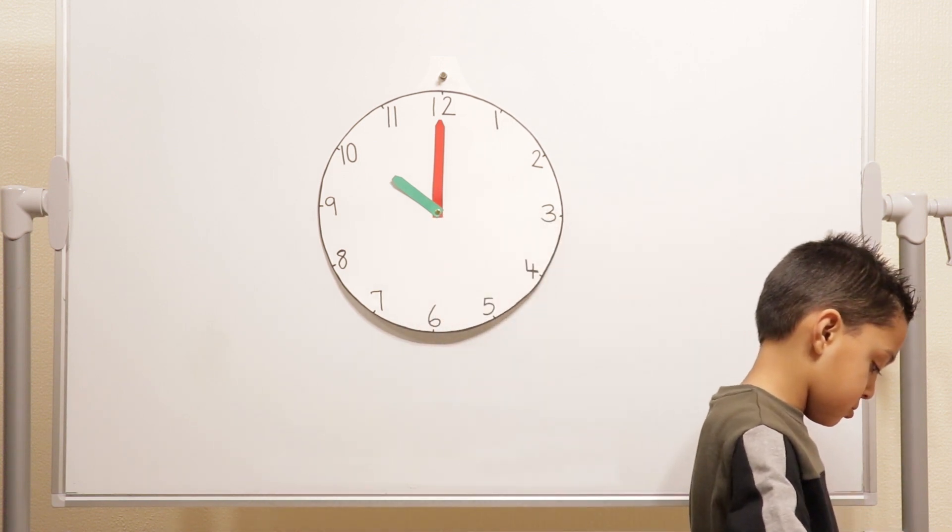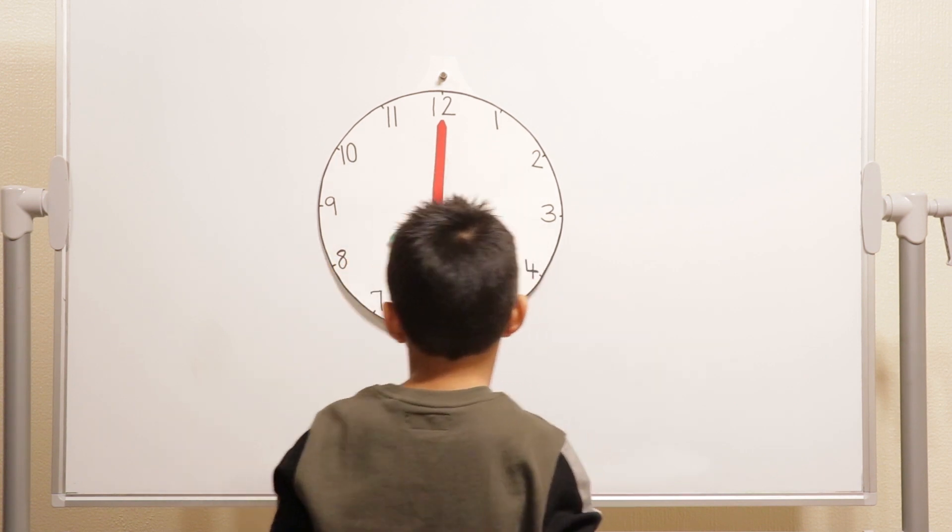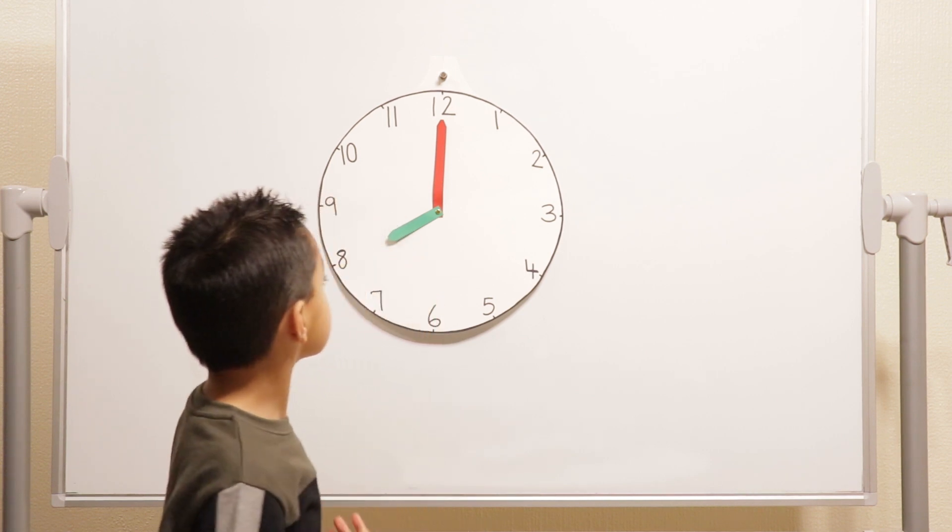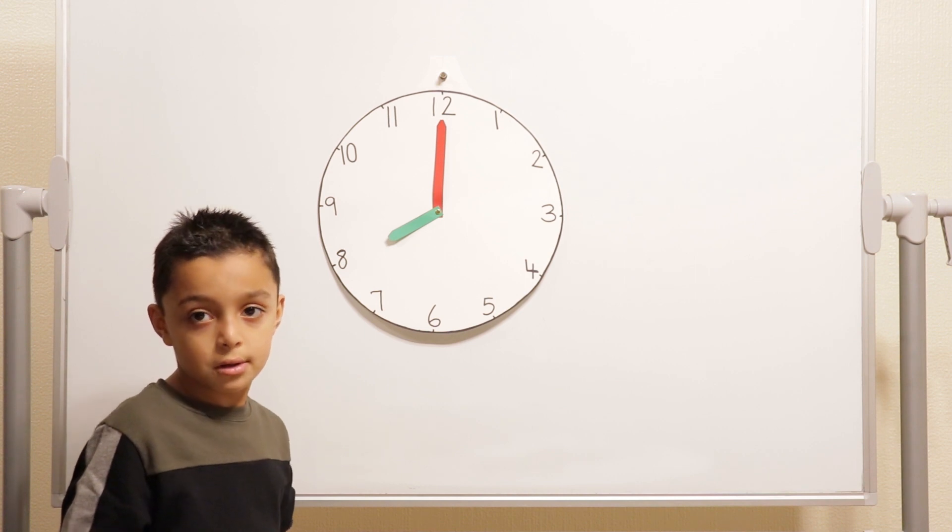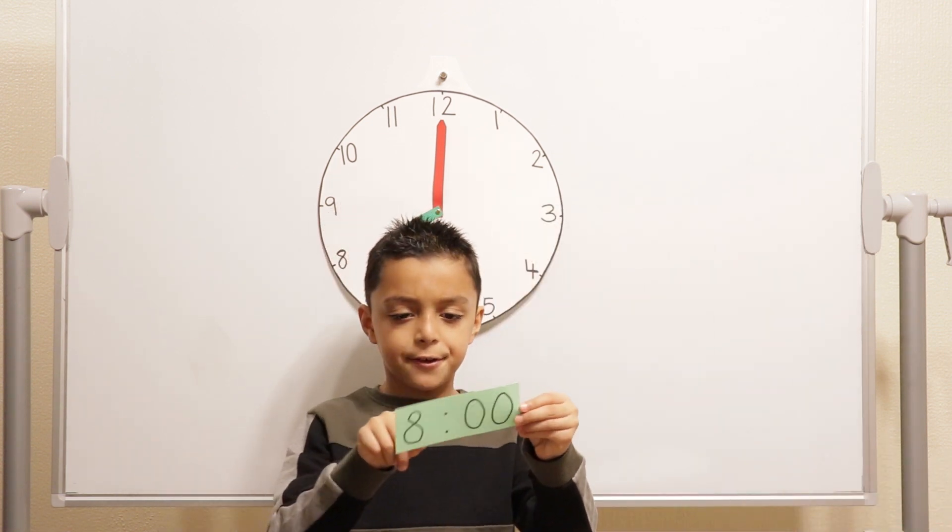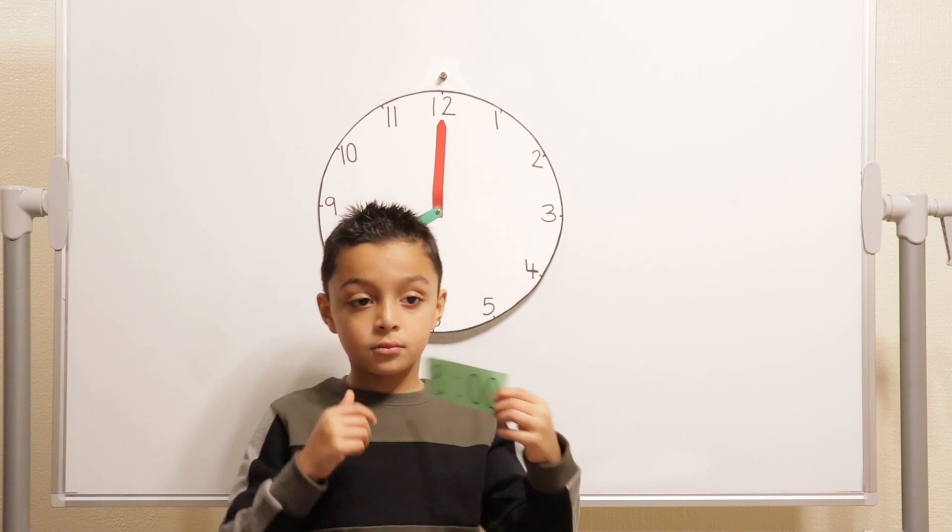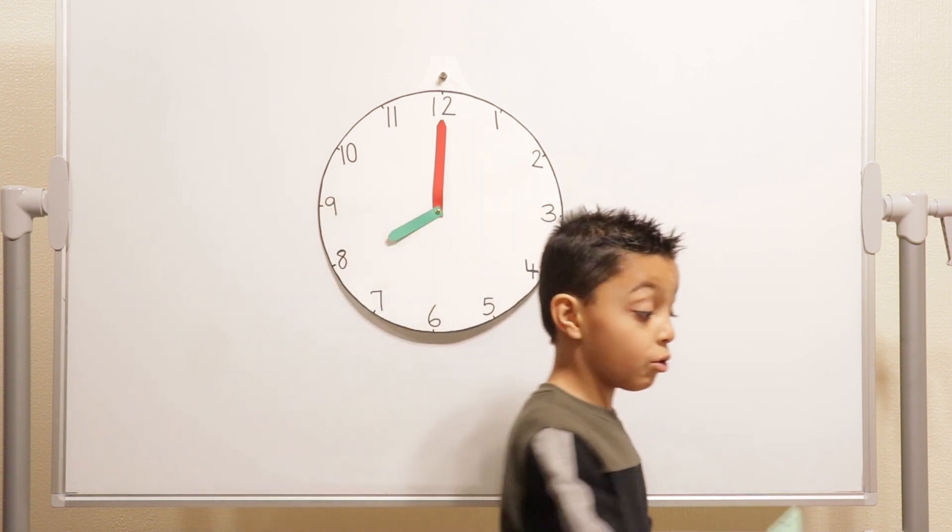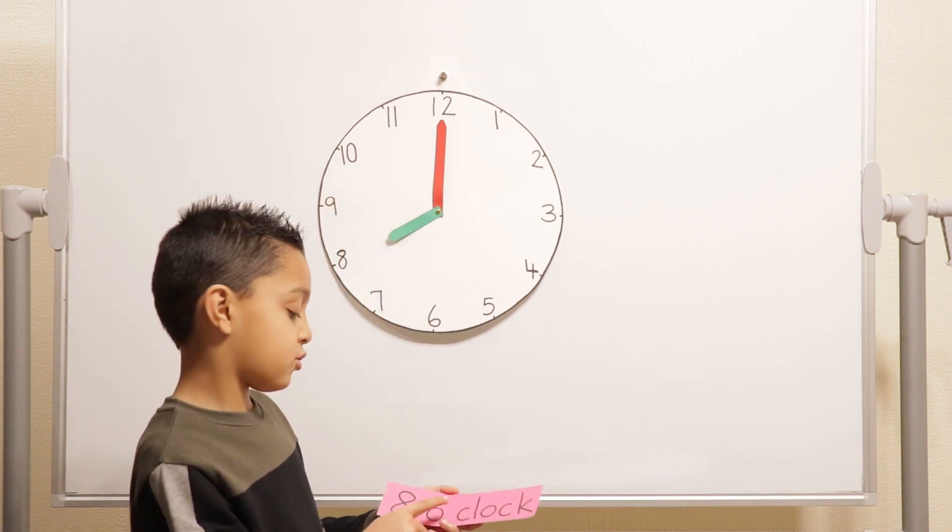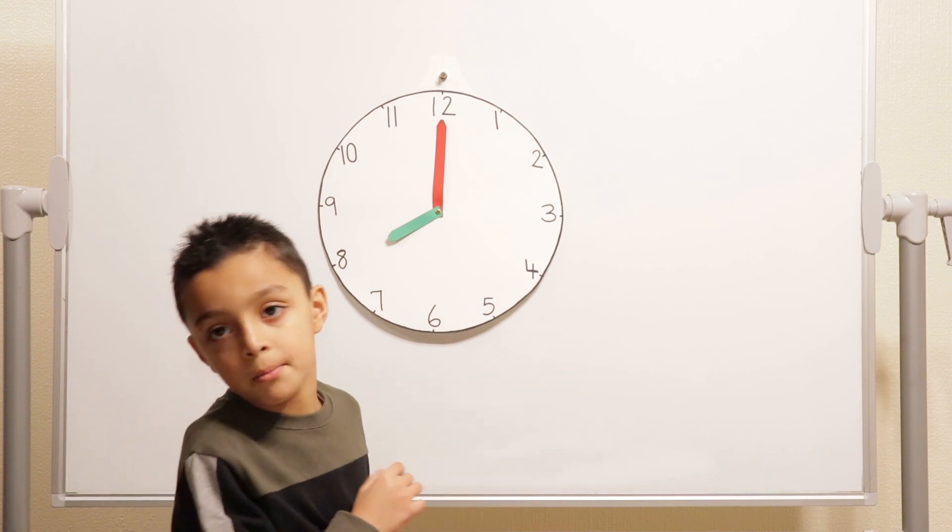So, can you put the time on 8 o'clock? On 8 o'clock. And explain the positions of the hands. It's the same, just the hour hand pointing to 8 and everything's the same. So, the minute hand always points at? The 12. When it's o'clock. Yes. So, can you show us how we would write 8 o'clock? 8 colon 00. Or? 8, o, apostrophe, clock. Which is 8 o'clock. 8 o'clock, very good.